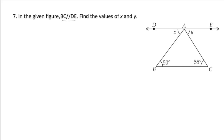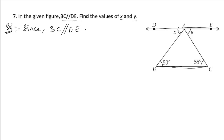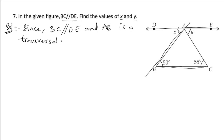Problem 7: In the given figure, BC is parallel to DE. We need to find the values of x and y. Starting with the given information — since BC is parallel to DE — we can see that AB is a transversal. So we can say that AB is a transversal.